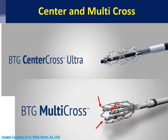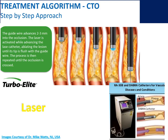The last crossing catheters to discuss are the Center Cross and Multi-Cross — really interesting devices. The Center Cross uses a stent-like apparatus to center yourself in the vessel. If you're crossing with just a wire and catheter, you'll have eccentric bias toward the subintimal space, but if you deploy the stent to center you, you stay in the center of the vessel. The Multi-Cross has three different wire ports, giving you three different chances to cross the lesion through one of those ports.